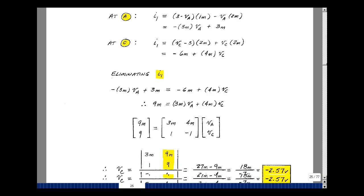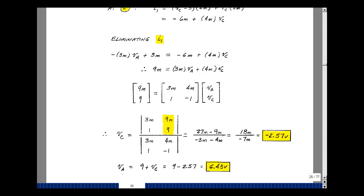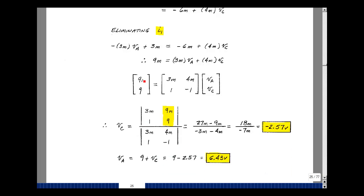So I could use Kramer's rule to solve for V sub A and V sub C. I'll bring this column over to the column associated with V sub C and take the ratio of that determinant to this determinant. So 27 milli minus 9 milli divided by minus 3 milli minus 4 milli. And that turns out to be minus 2.57.